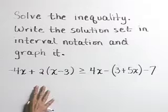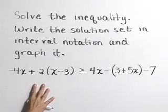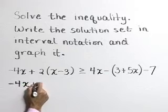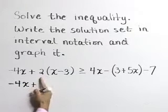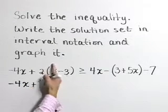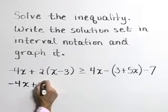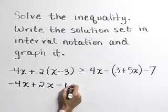Let's start by simplifying both sides as much as possible. On the left-hand side, we have a negative 4x plus, using the distributive property and multiplying 2 times both terms in parentheses, we have a plus 2x and a minus 6.